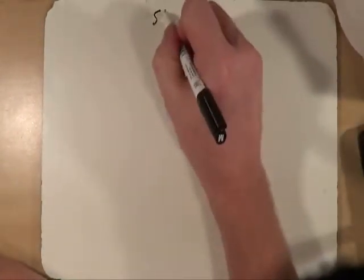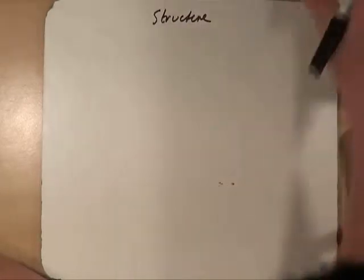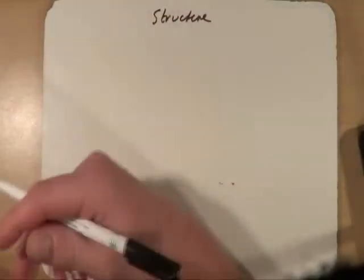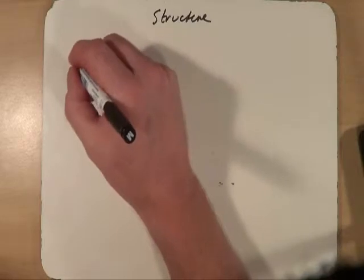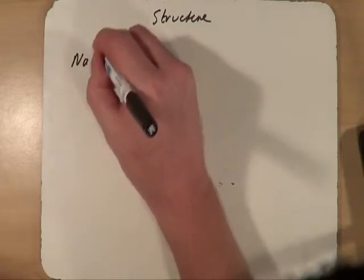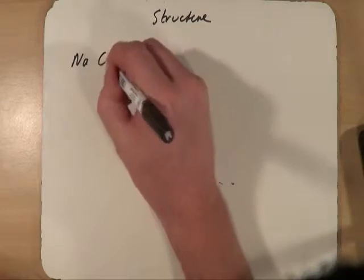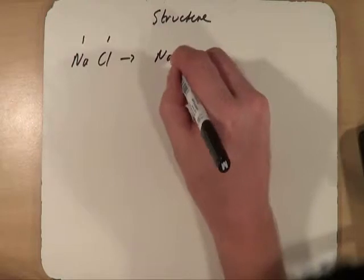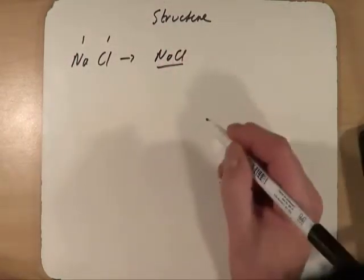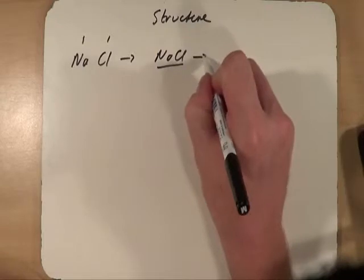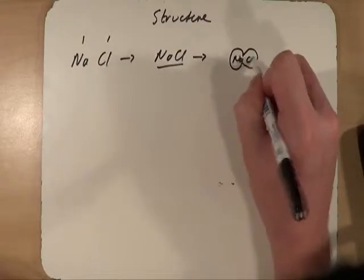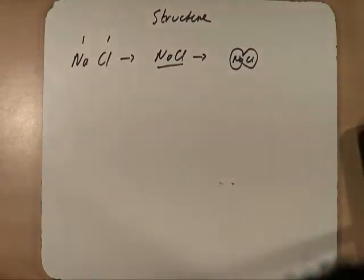First of all, what do I mean whenever I talk about the structure? Well, we've already looked at sodium chloride, and if we talk about the formula of sodium chloride, you would know to go to the periodic table and find sodium and chlorine. They both have a combining power of one, so the formula of sodium chloride is NaCl. Now, a lot of students therefore imagine that sodium chloride exists as these two little atoms joined together.